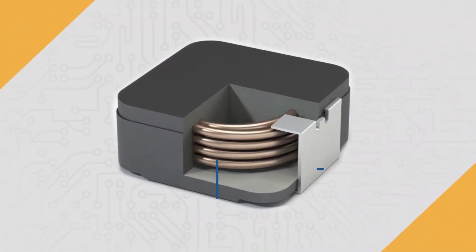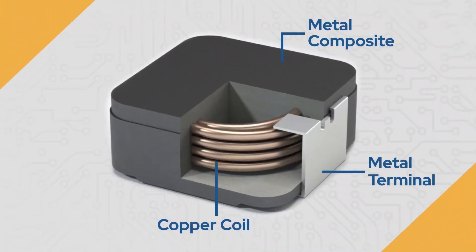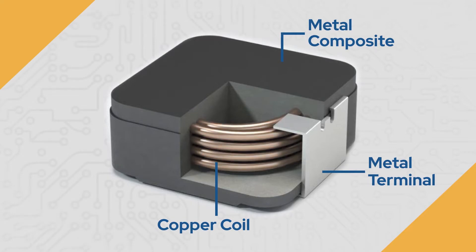Before we jump into that, let's do a brief review of inductor construction. This is how our MPS inductors are built, but all inductors are based on the principle of a coiled conductor. This conductor has a DC resistance, and this resistance causes the coil to heat up whenever current is flowing through it. This self-heating is what we use to determine the rated current.